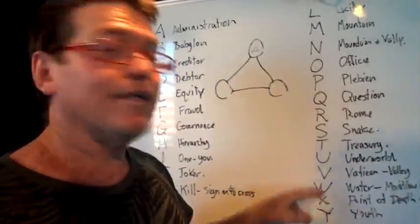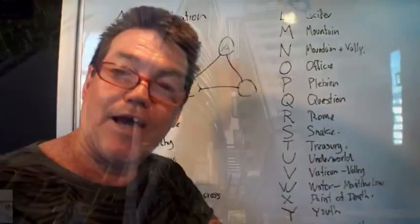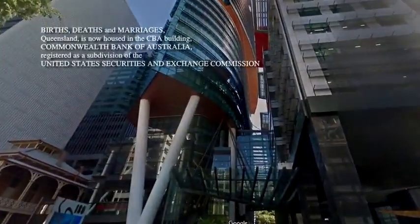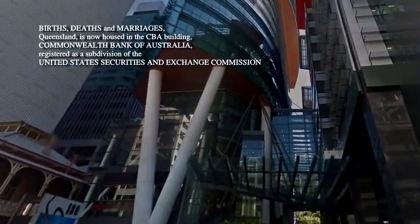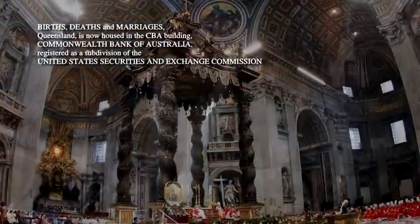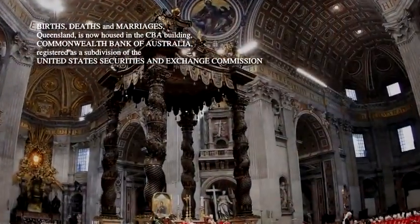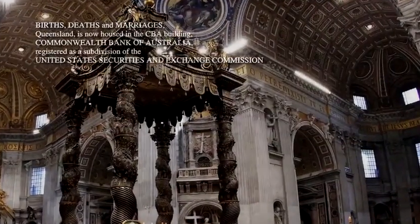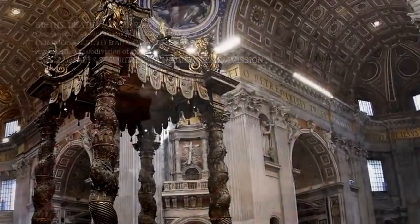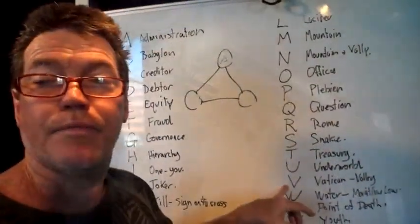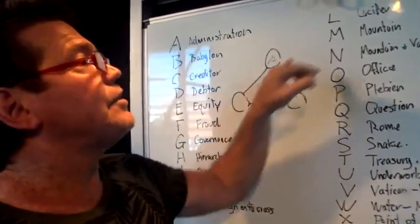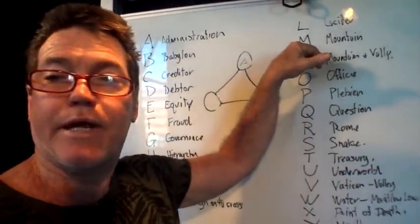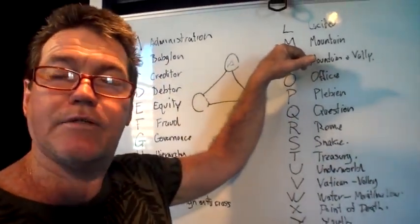V — obviously the Vatican. It's the world bank. If you are not on the mountains — on the land law, which is the common law of land — then you have no power to direct the Vatican. With the mountain you're standing as the creditor. If you're not standing on the mountain, you're in the water that's flowing as currency through the valleys.